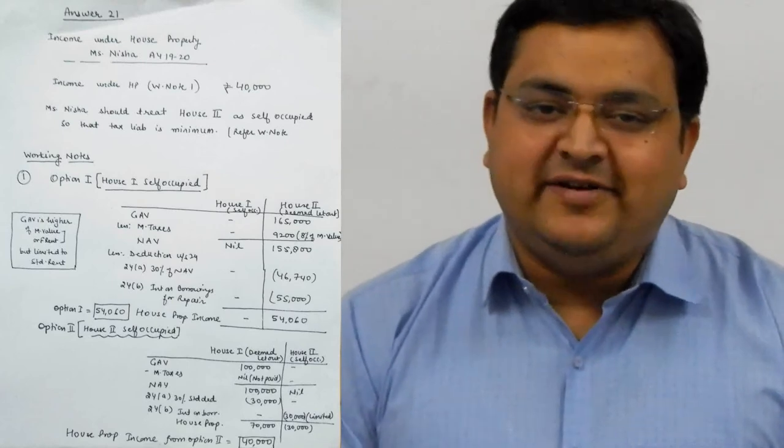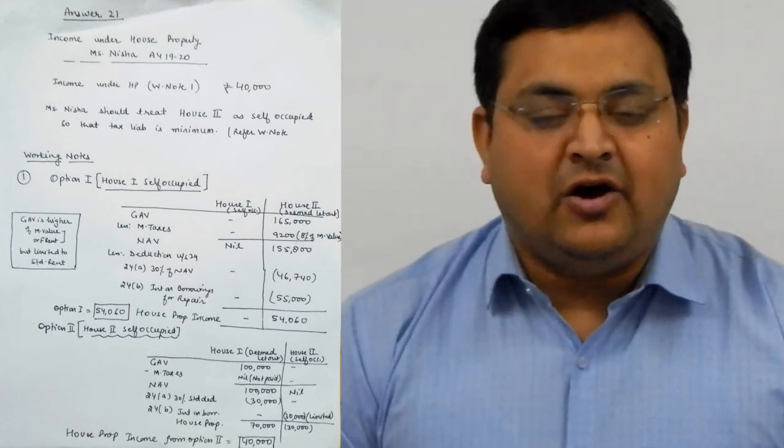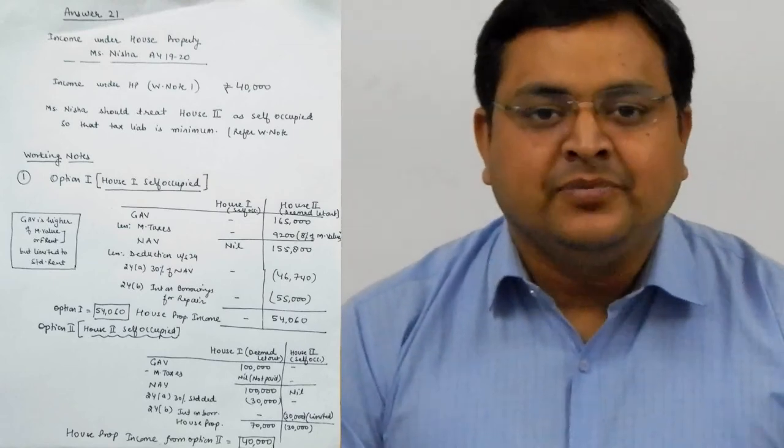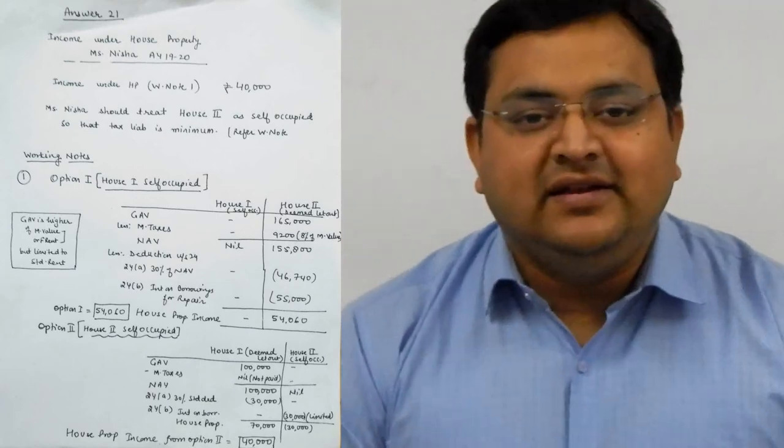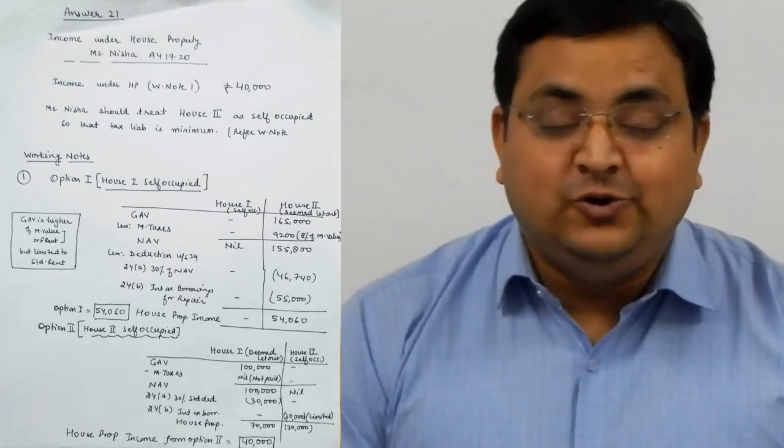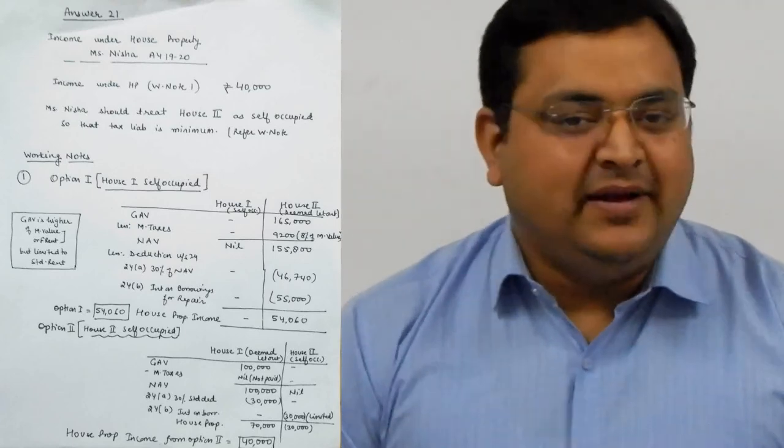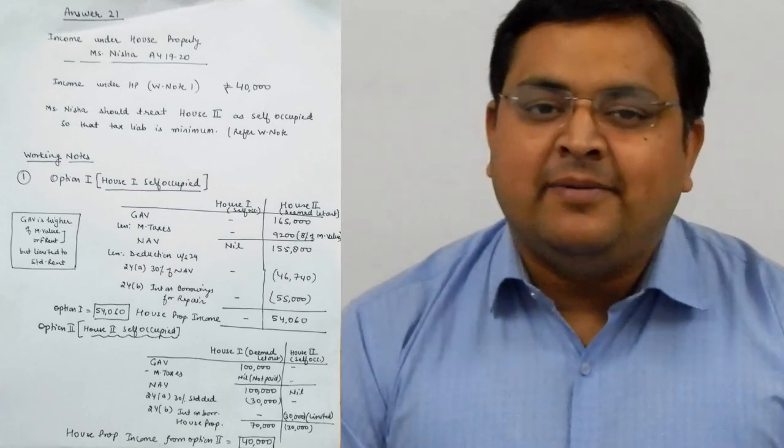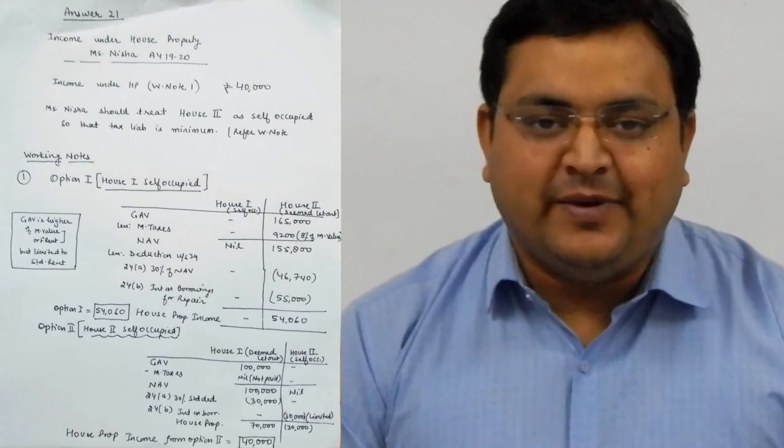House 1 you have 70,000, house 2 you have 30,000 negative, that makes your house property income 40,000. In option 1, your house property income is about 70,000 rupees, and in option 2, your income is 40,000 rupees. The beneficial option is number 2, where house 2 is self-occupied.